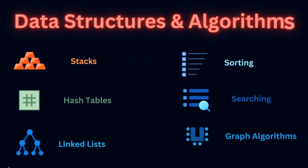The next stage is DSA — Data Structures and Algorithms. Now that you know a programming language, you need to think like a problem solver. Think of coding like cooking: if programming languages are ingredients, then DSA is the recipe. Without the right recipe, your code might be slow, inefficient, or even break. Learn essential data structures: arrays, linked lists, stacks, queues, hash tables, trees, and graphs. Also learn essential algorithms: sorting, searching, graph algorithms, and dynamic programming.